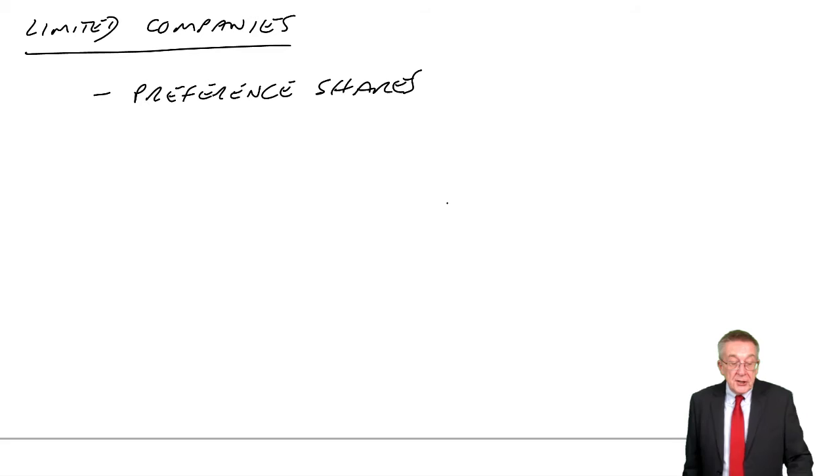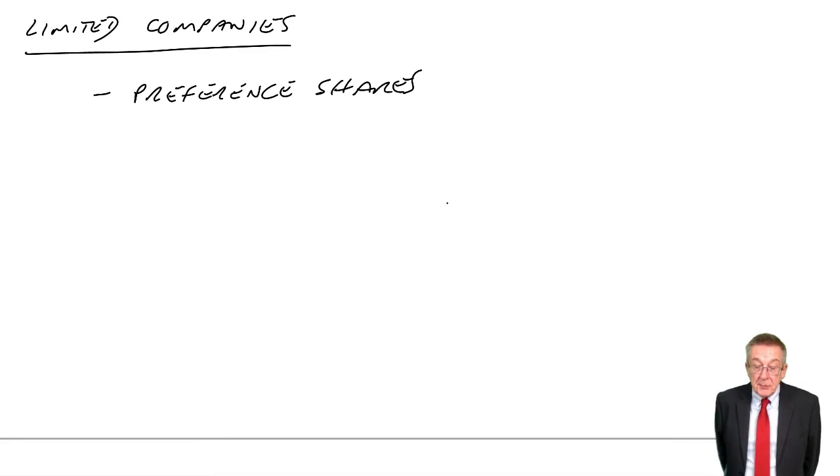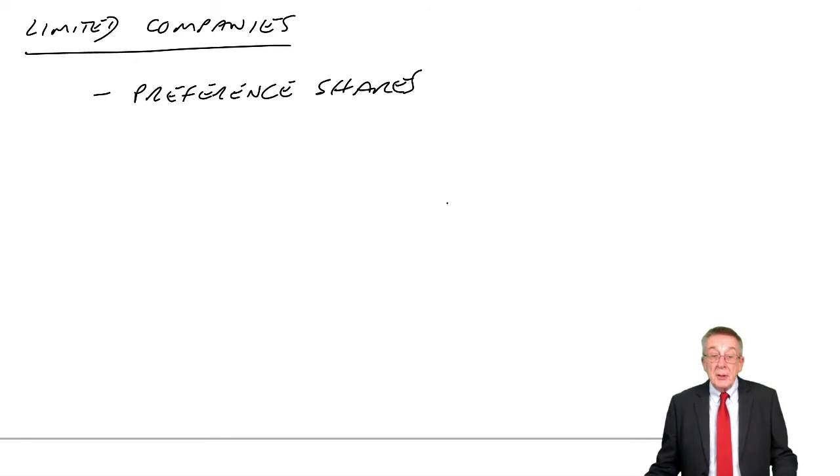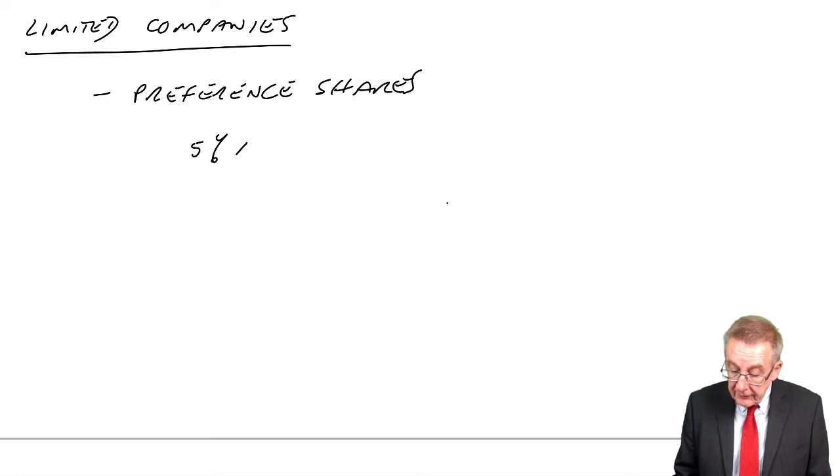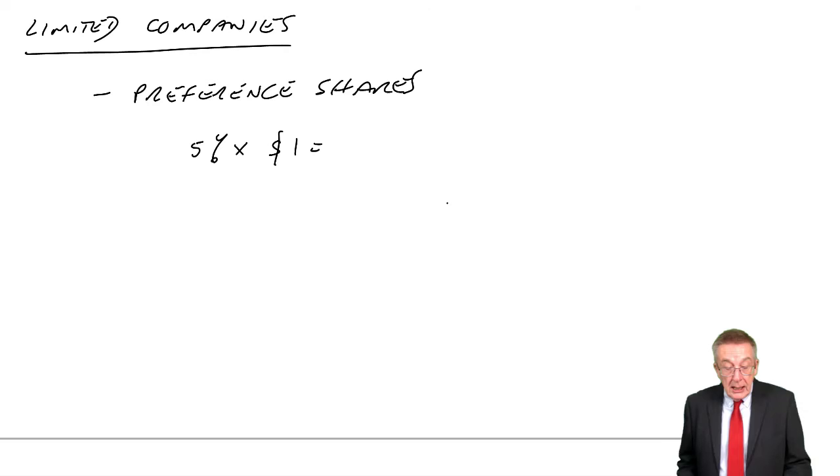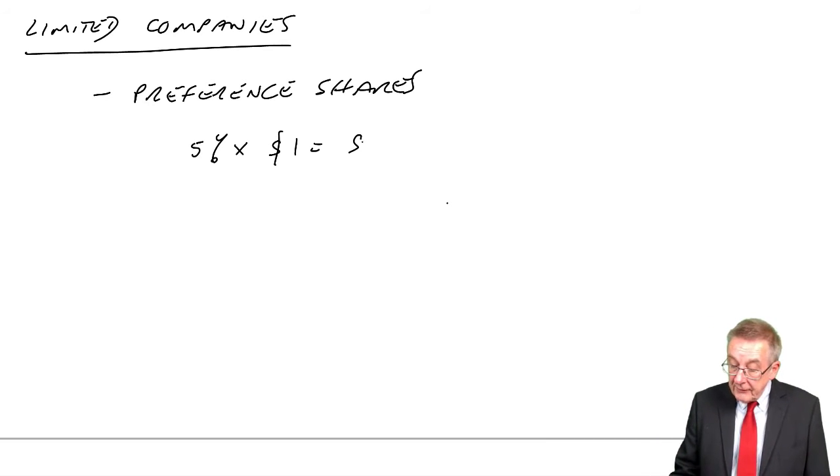And the way it tends to be described, look at example six. A company has in issue 10,000 5% preference shares of a dollar each. The dividend is payable half yearly, which is quite common. So every six months they get the dividend. Well, their dividend is guaranteed. As I say, it doesn't matter what the profits are. When it says it's 5%, the dividend is 5% of the nominal value of a dollar.